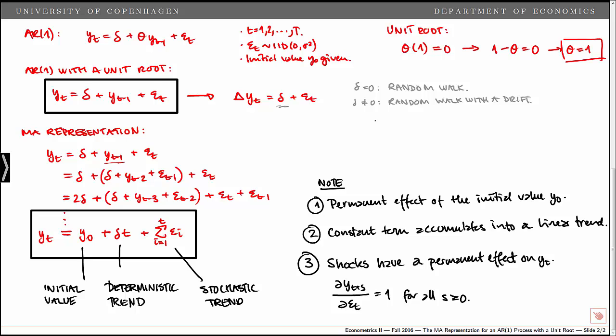Finally, we can make a simple plot of what this process looks like. We start at Y_0, and note there's a deterministic trend. Here we have a deterministic trend where the slope is given by the constant term, and the series looks something like this.